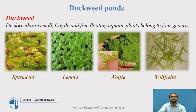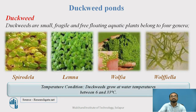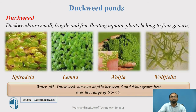There are various types of duckweeds present in ponds. They are typically small, fragile, and free-floating aquatic plants. There are four genera in total. The first is Spirodela, the second is Lemna, which is mostly used for the treatment of wastewater, the third is Wolffia, and the fourth is Wolffiella. The Lemna family is worldwide but the most diverse species appear in subtropical or tropical areas. The temperature condition for duckweed growth is between 6 to 33 degrees Celsius. The water pH in which duckweed survives should be between 5 to 9, but it grows at a faster rate when the pH is in the range of 6.5 to 7.5.